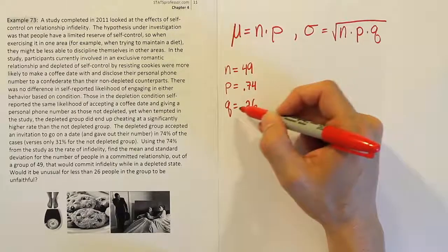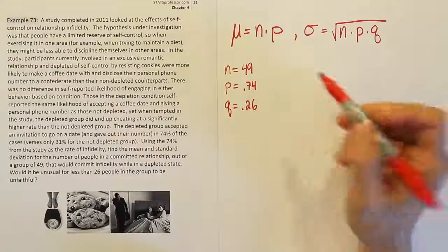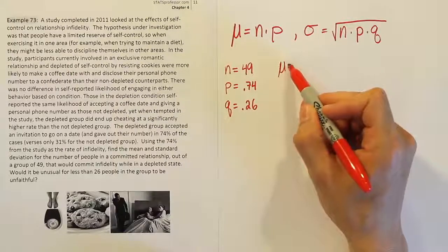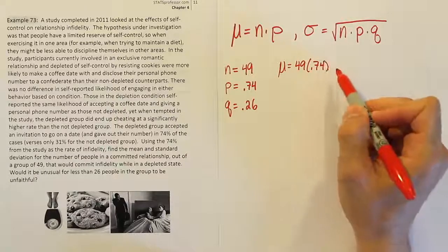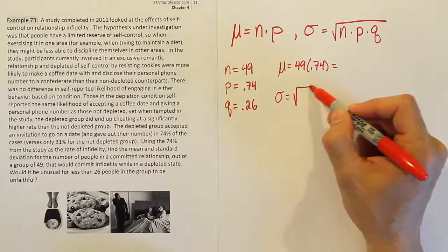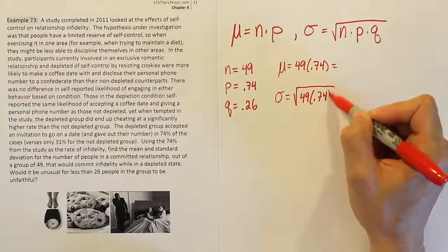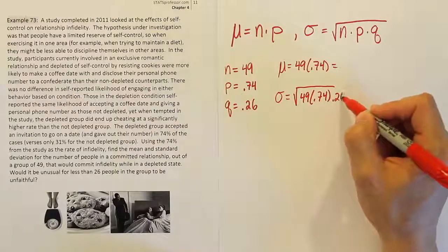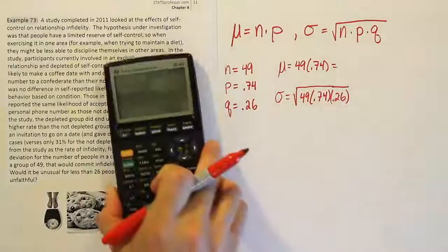Once you have those values, you can plug them in for the mean. The mean here is simply going to be 49 times 0.74. We'll work that out in a minute with our calculator. Let's do the standard deviation next though. Standard deviation is the square root of 49 times 0.74 times 0.26. Okay. So let's work all those out in our calculator and see what they give us.